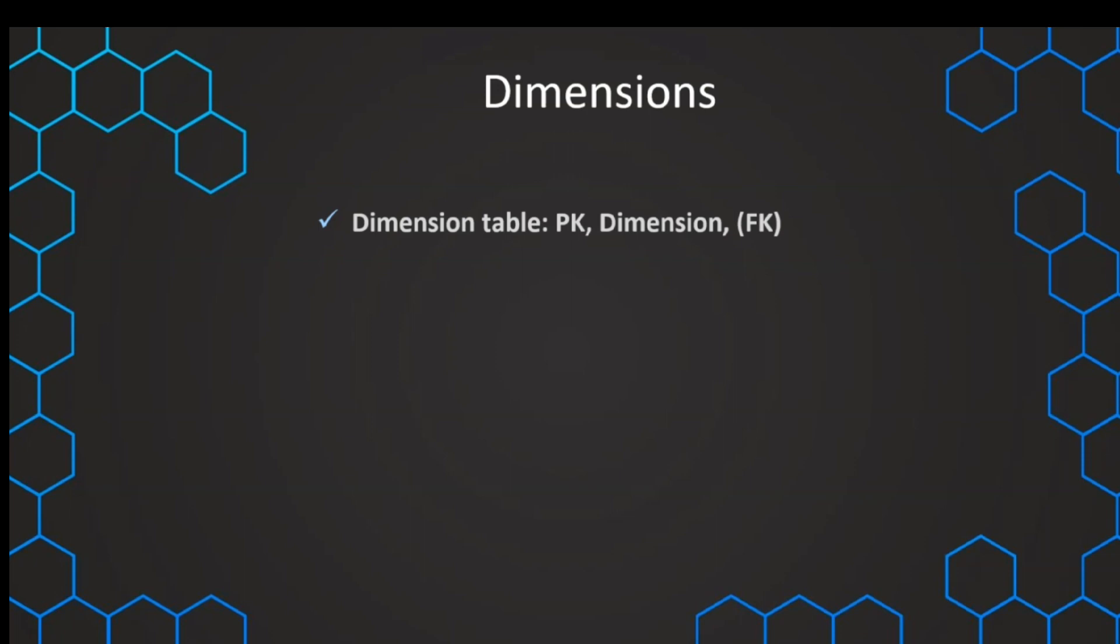These dimensions are in dimension tables. In these dimension tables, we have a primary key that is needed to identify every row, but also sometimes we can have an additional foreign key in our dimension. This will be important when we talk about snowflaked dimensions, which we want to dive deeper into later on.